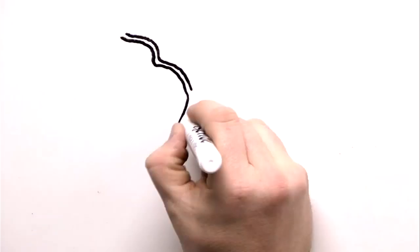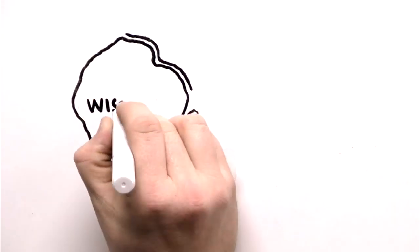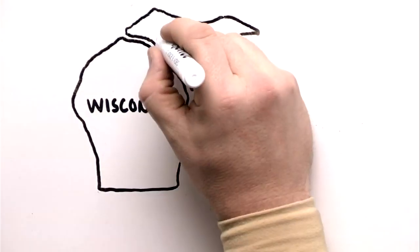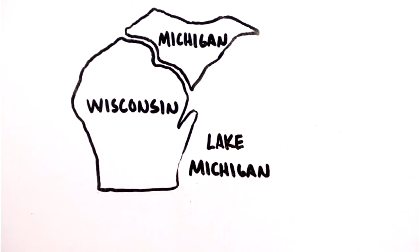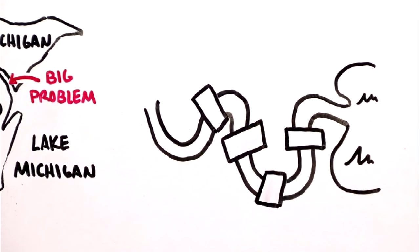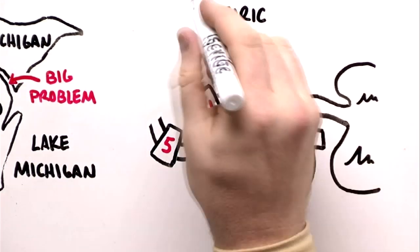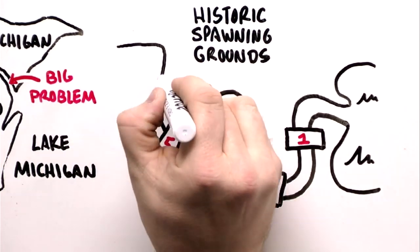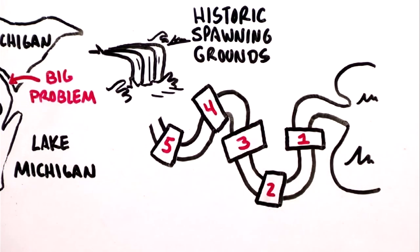For the resident sturgeon of the Menominee River, the border-forming river between Wisconsin and Michigan's Upper Peninsula, getting to big water, Lake Michigan, is a big problem. There are five dams between the lake and the sturgeon's historic spawning grounds at Sturgeon Falls, about 82 miles upstream from Lake Michigan.